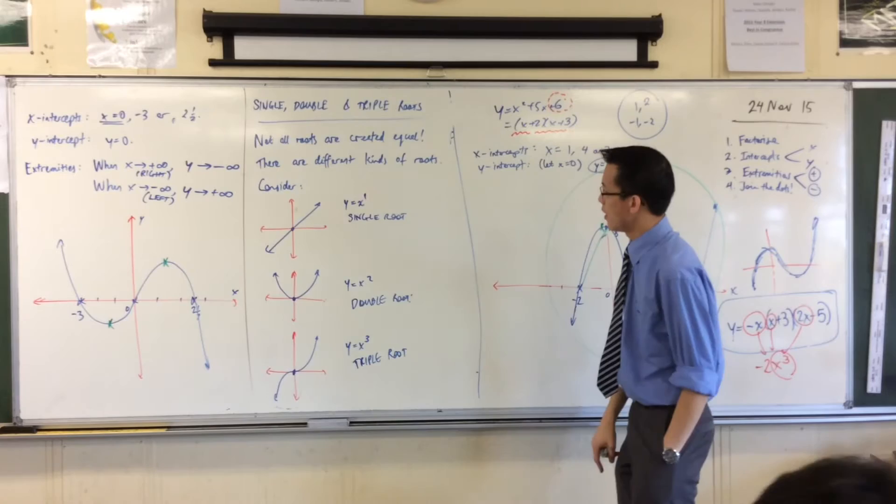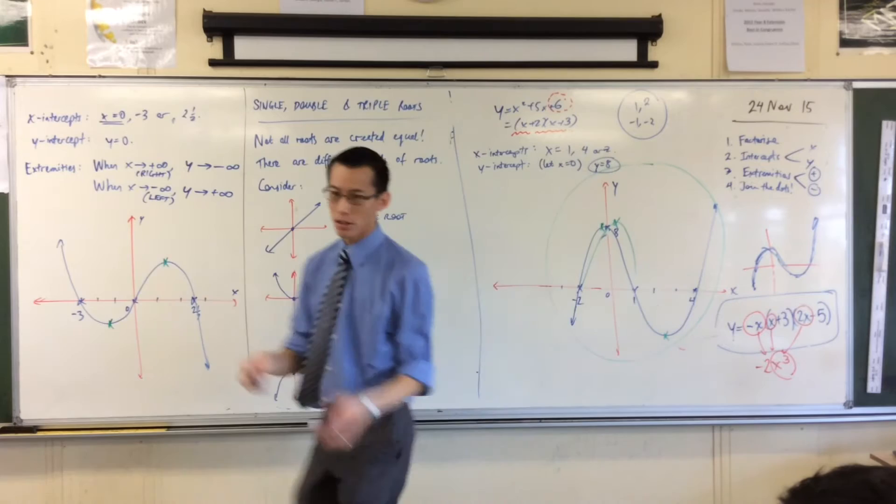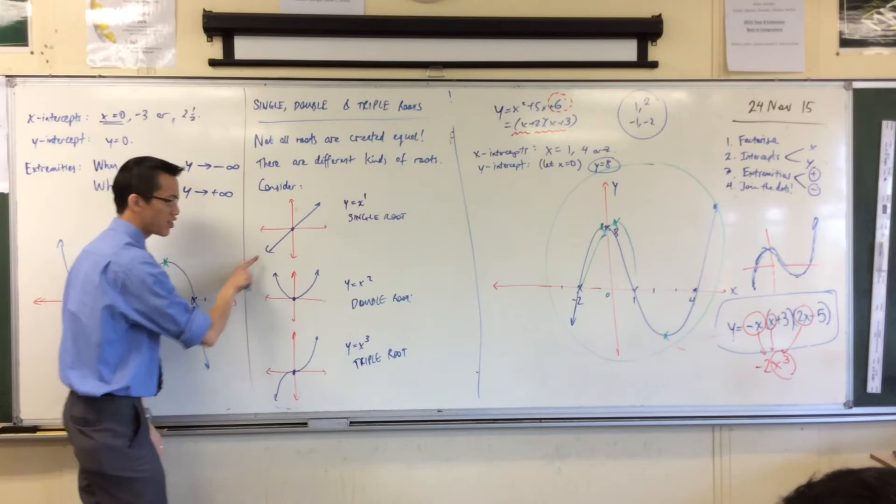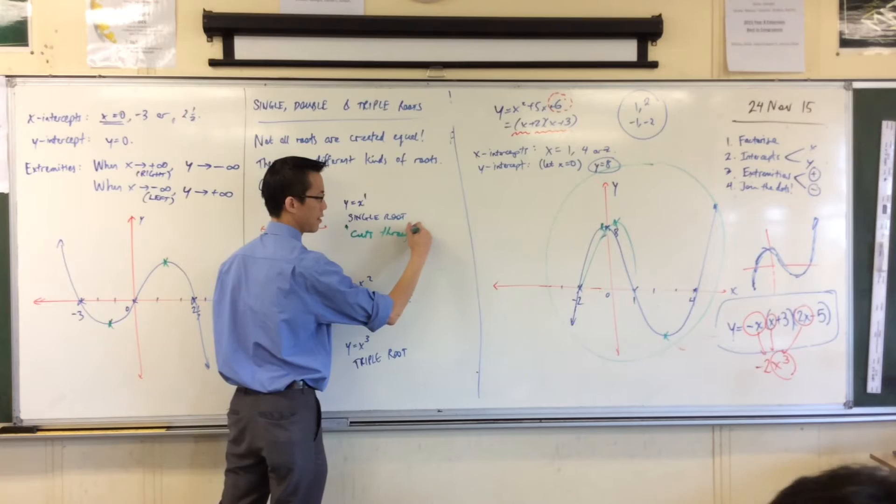Now, you can see a few things. Number one, this language here—the single root, double root, triple root—what it's really referring to is the degree of the polynomial. If you've got x to the one, you've got a single root. If you've got x to the two, you've got two roots. If you've got x to the three, you've got three roots. So that's where that language comes from.